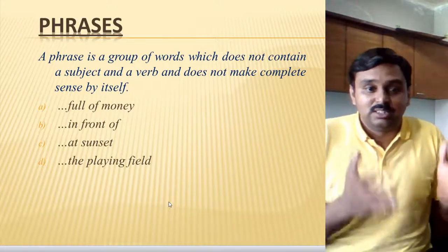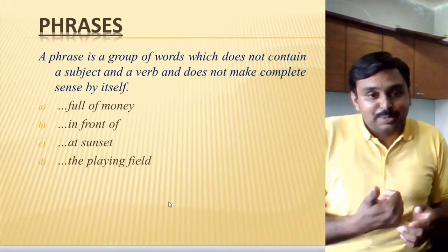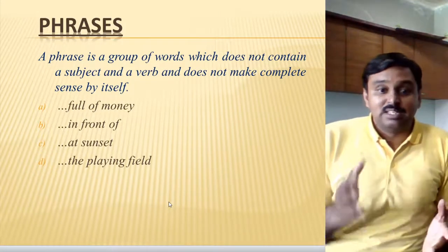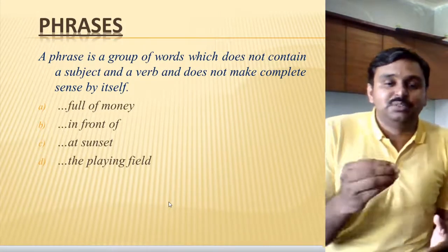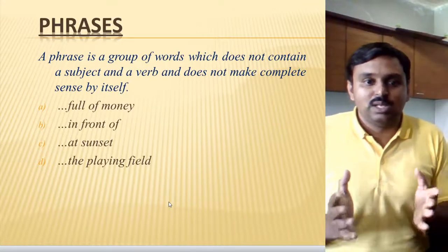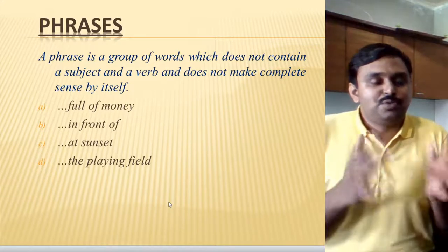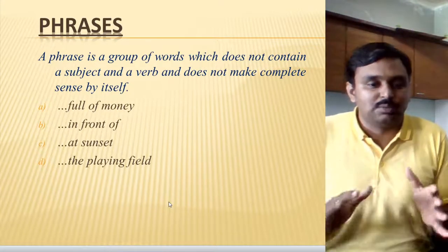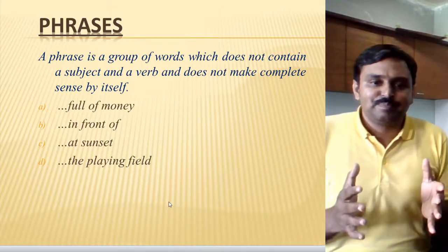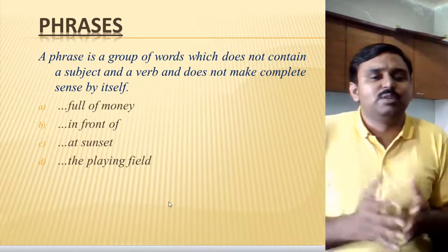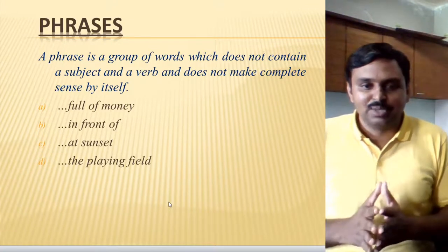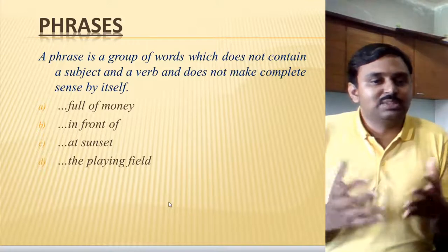The subjects are not there. Then the verb — action words are not seen there either. Sometimes you may find some verbs in phrases, but they can be called verbal phrases. But most of the time we find the phrase without a verb only. Verbs do not consist in the following phrases: 'full of money,' 'in front of,' 'at sunset,' and 'the playing field.' In these, the verbs are not seen.